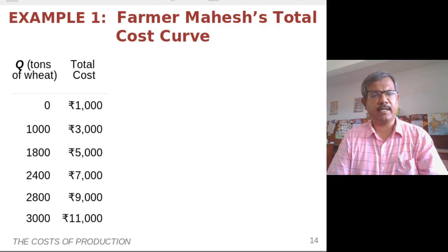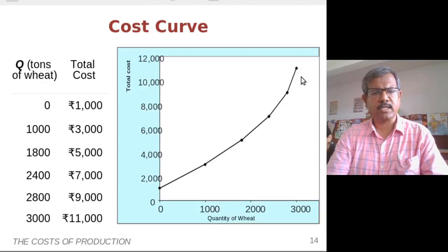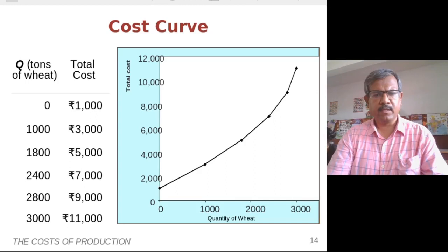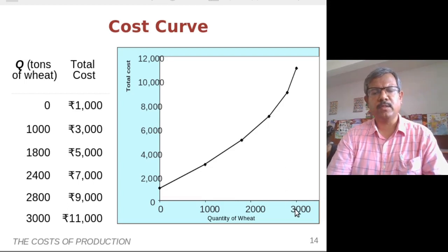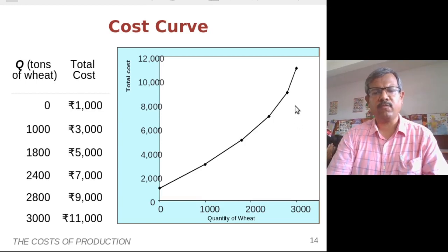Now let's try and calculate the total cost curve of farmer Mahesh. If you look at the cost curve based on the data presented in the table, initially when the quantity of wheat is about 1000 or 2000 tons, the total cost incurred is gradually seen to be increasing. But as he tries to increase his output keeping the amount of land fixed, for every additional amount of wheat he wishes to grow, the total cost starts increasing almost exponentially.